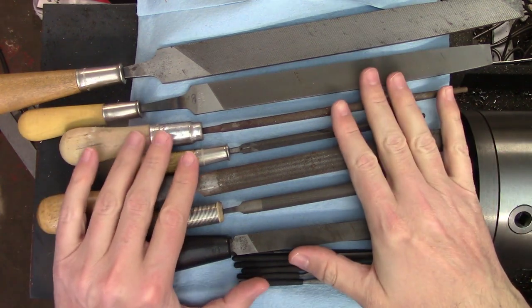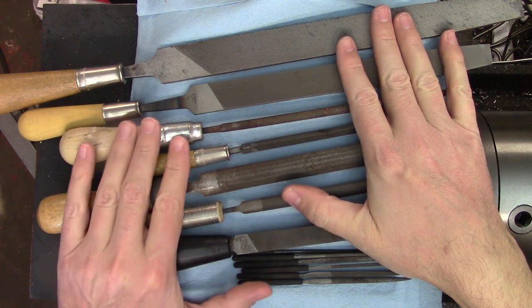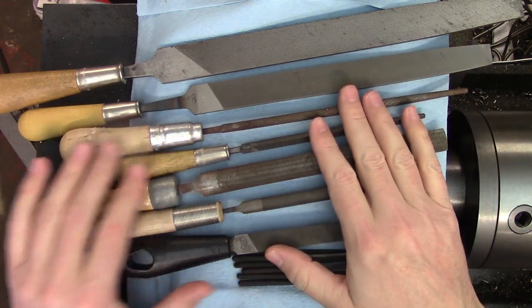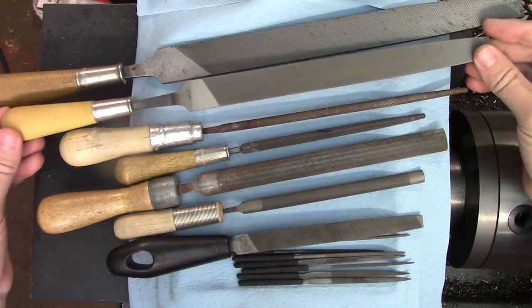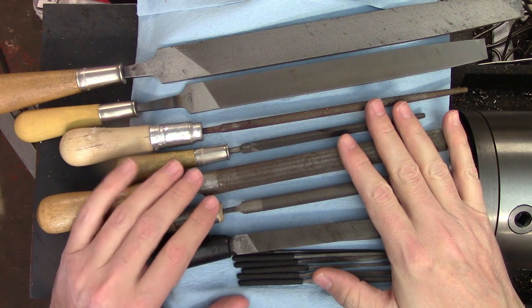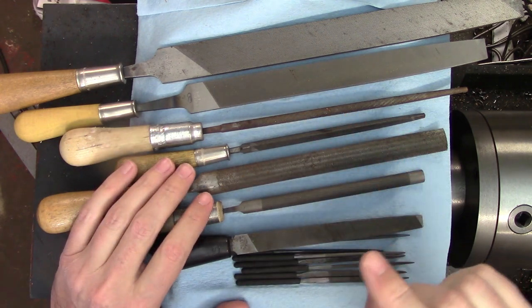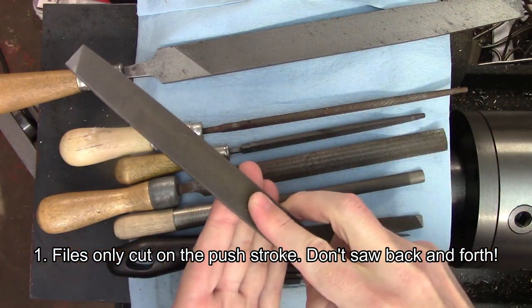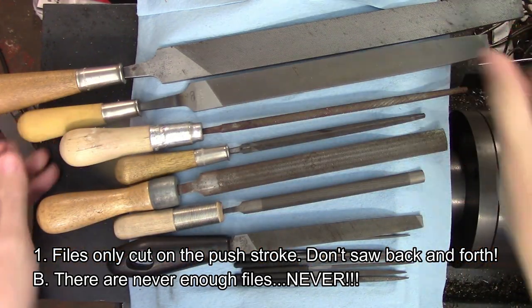Finally, let's talk about tools. Of course, we have files. They're the workhorses of the deburring tools at our disposal. They come in a variety of shapes, sizes, and cuts, and it's good to have a nice selection to choose from. But if you're new to the game, start with maybe an 8 to 10 inch mill bastard file and a set of decent needle files. Those will cover the vast majority of your deburring needs. I could easily make a video just about files if I thought anyone would actually watch it, but there are two main points you should know about them. Number one, they only cut on the push stroke, so sawing back and forth with them isn't going to make you more productive. And B, you can never have too many.